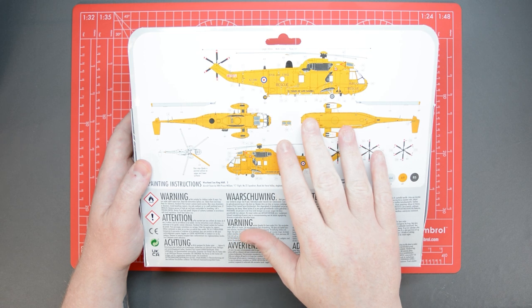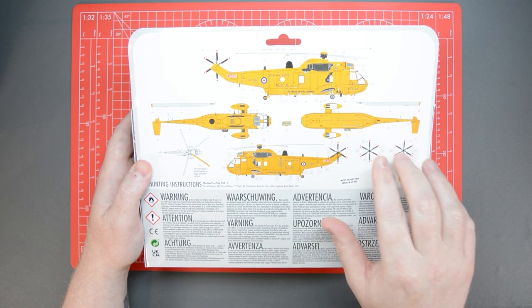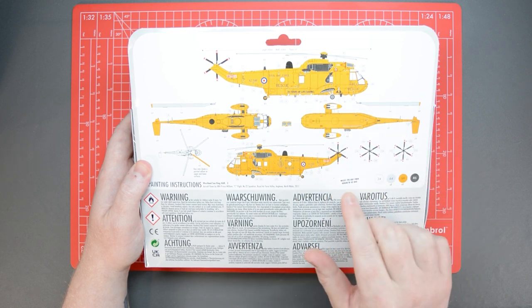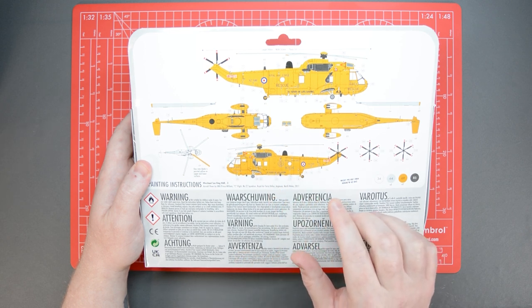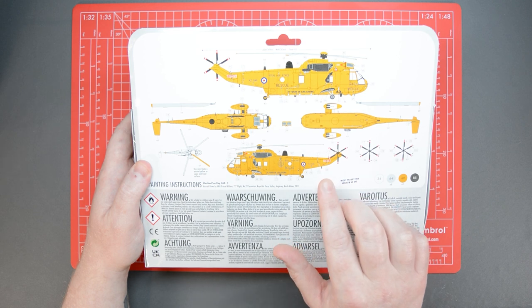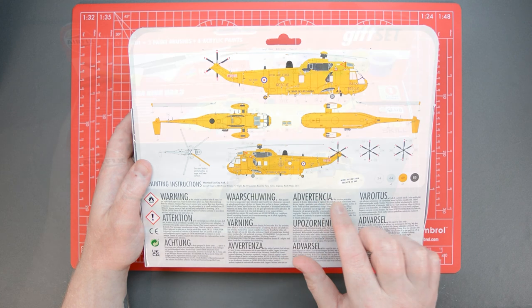On the back of the box you'll find the usual full colour diagrams with colour call-outs for the supplied acrylic paints. In the small square boxes you'll find numbers which relate back to the supplied transfer sheet and these will guide you in placing the transfers to create an aircraft which was flown by Prince William in Sea Flight No. 22 Squadron over North Wales in 2011.